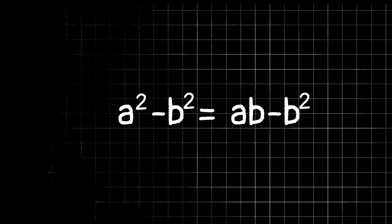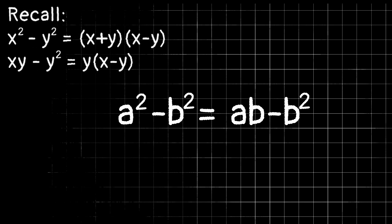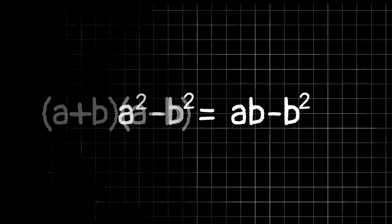If you recall back in algebra class, you might have learned about difference of squares and the greatest common factor. So we can actually rewrite a squared minus b squared as a plus b times a minus b. If you're not sure about that, go ahead and try and multiply that out and just verify that that does in fact equal a squared minus b squared.